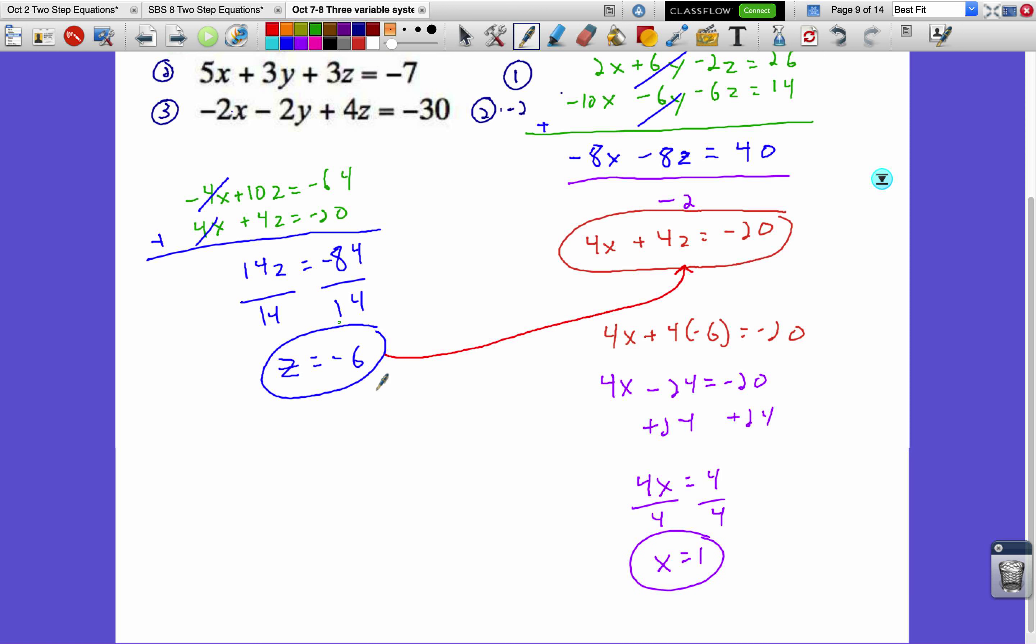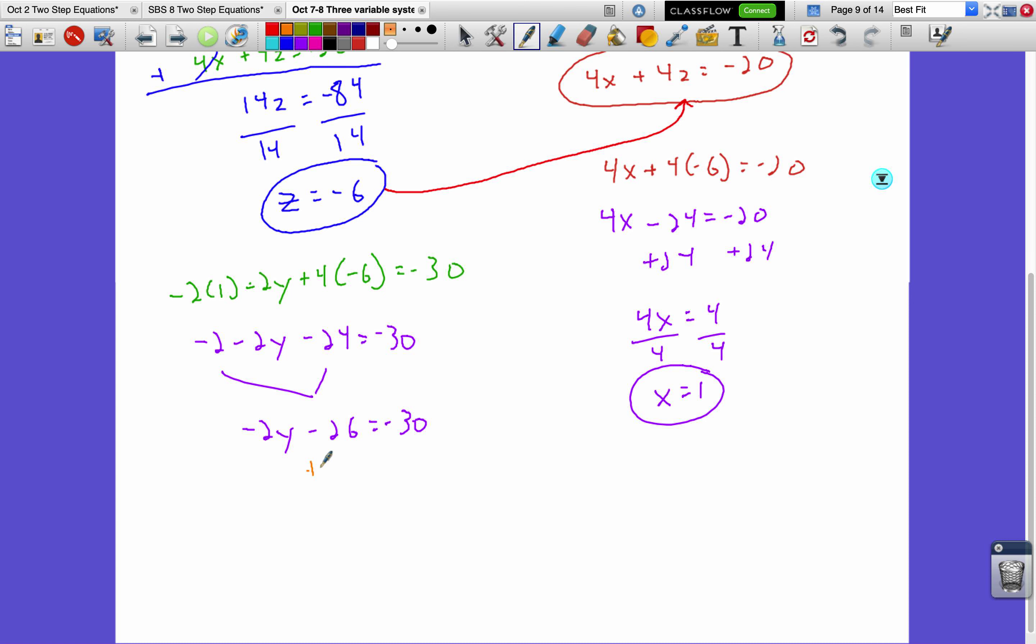Now that I've got both x and z, I can go back to one of these original equations and solve for y. So I'll go to that bottom one there. Negative 2 times 1, minus 2y, plus 4 times negative 6, equals negative 30. Negative 2 minus 2y, minus 24, equals negative 30. Combine like terms, negative 2y minus 26, equals negative 30. Move constants away from the variable, add 26 both sides. Negative 2y equals negative 4, divided by negative 2. Y equals 2, circle that.